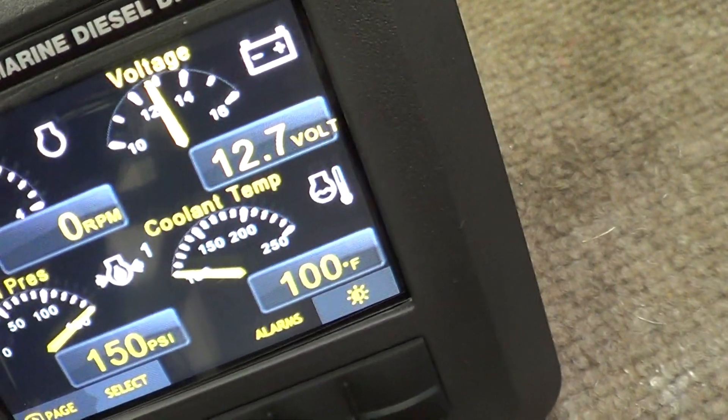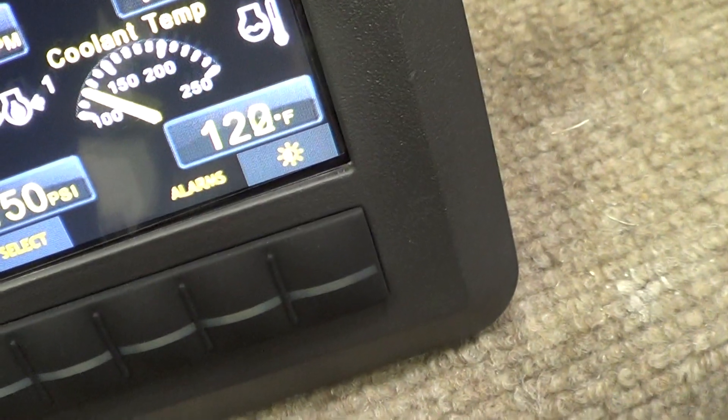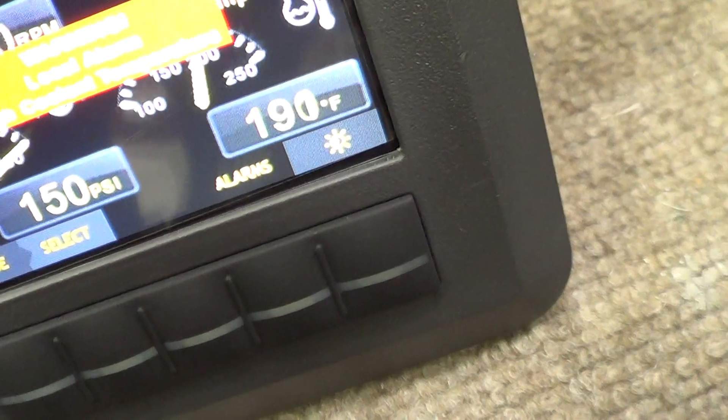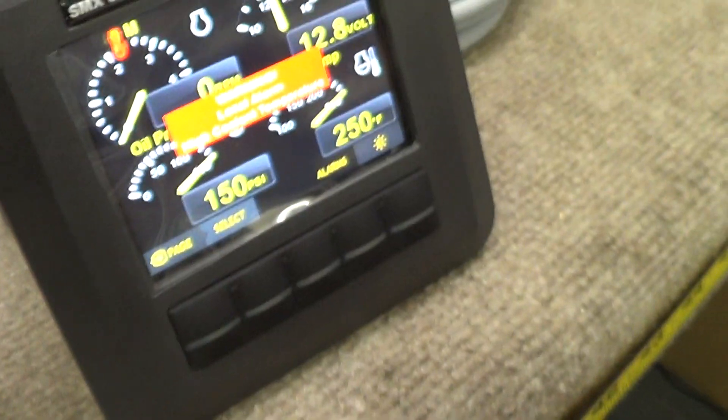Now let's do the same thing for coolant temp, which is our brown wire. There. We'll notice we're getting a high cooling alarm on both screens.